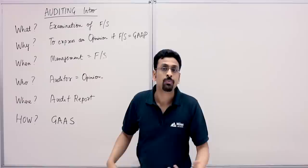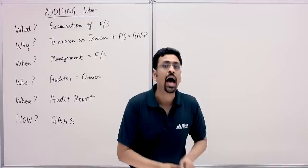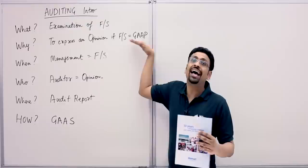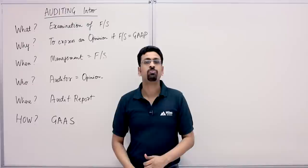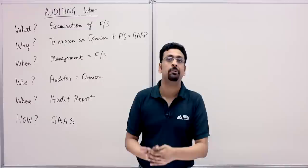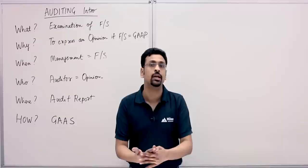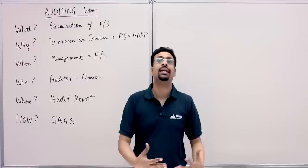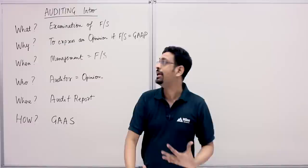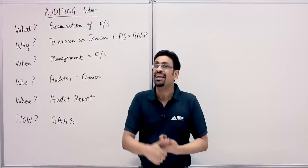Where do we express our opinion? That's done on the audit report. An audit report can have various kinds of opinions. If we're happy with the financials — it's a clean opinion — we give an unqualified opinion. If we smell something fishy, that's a qualified opinion. If the financials are all cooked up, we give an adverse opinion. And there are circumstances where we don't want to express an opinion at all — that's when we give a disclaimer.